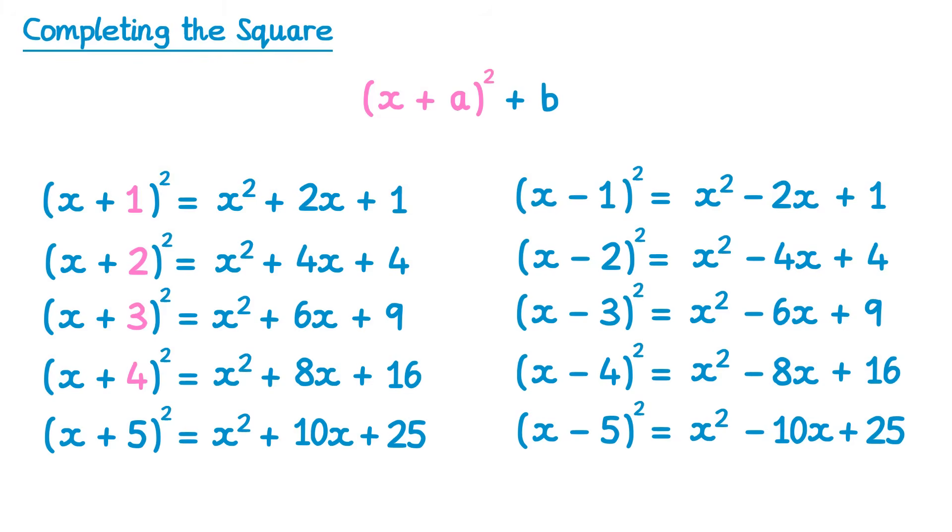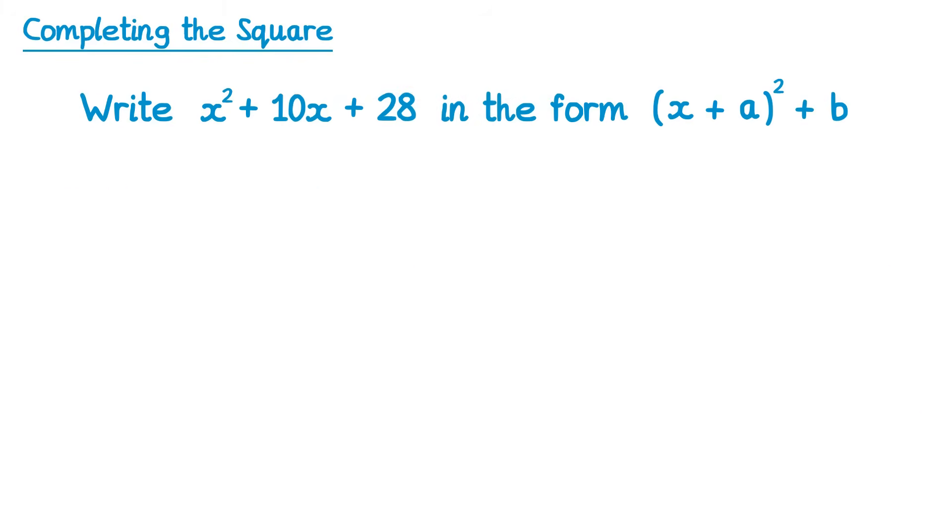Now what does all of this mean for completing the square? Let's return to the question from the start of the video. If we compare the first two terms here, x squared plus 10x, with the first part of the completed square form, x plus a all squared, we should be able to work out what a needs to be.